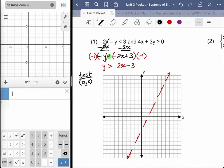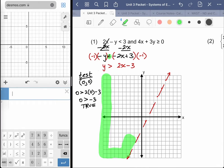And so if I get a true sentence, I would shade the side of the line that includes 0, 0. If I get a false one, I would shade the opposite side. So instead of y greater than 2x minus 3, I'll say 0 is greater than 2 times 0 minus 3. Just replacing the x and y with 0 and 0.